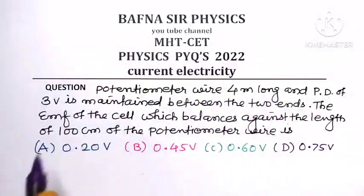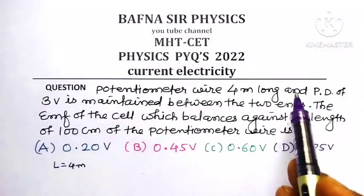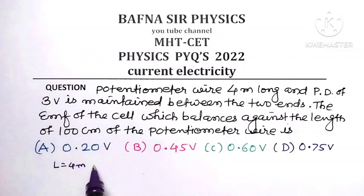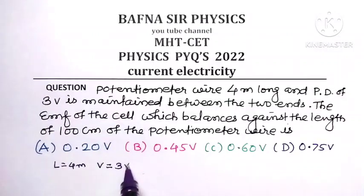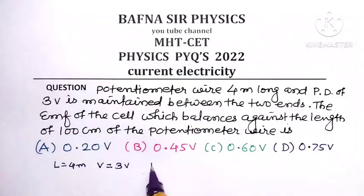Potentiometer wire 4 meters long (L = 4m) and potential difference of 3 volts is maintained between the two ends of the wire (V = 3V). The EMF of a cell, let E is the EMF of a cell.